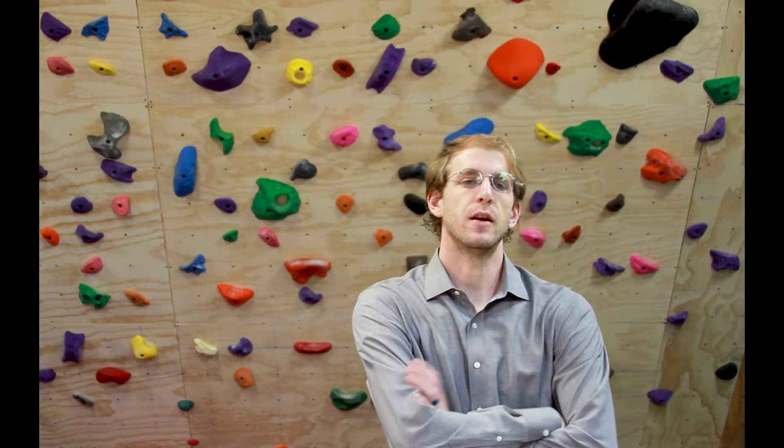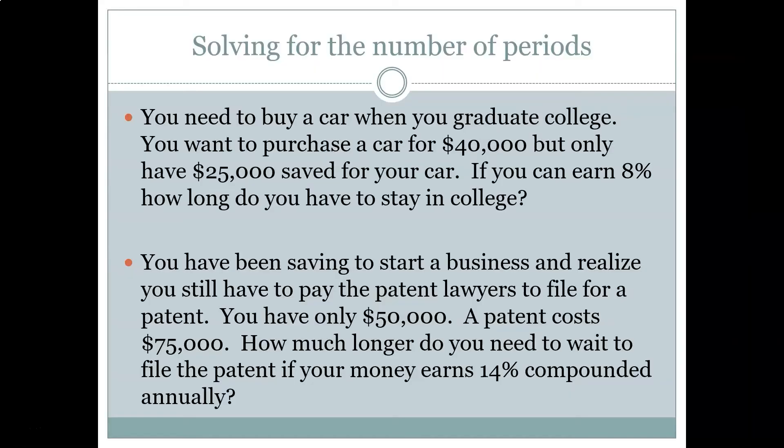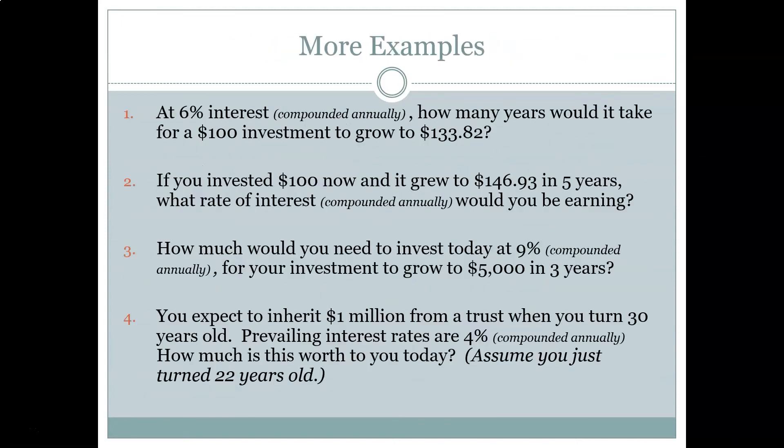Just like solving for the rate, we can use the calculator to solve for the number of periods, N. The main things to be careful with when solving for rate or N are that you make sure you're accounting for the correct compounding period. If it's annual, then everything needs to be in an annual period. If it's monthly, then everything needs to be converted to a monthly period — you have a monthly rate and a number of months. Making sure you identify the correct compounding period is the biggest trip-up for people working these problems initially. The rest of the slides in this chapter are just more examples.